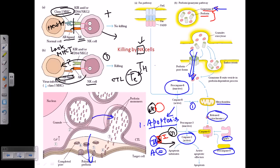Cytotoxic T cells use the same killing machinery — granzymes, perforin, and the same apoptosis pathway. The key difference is that cytotoxic killer cells need activation via T helper cells, whereas natural killer cells don't require T helper cells at all. Whenever NK cells detect reduced MHC class 1 on a cell's surface, they kill it via the perforin and granzyme-mediated pathway.